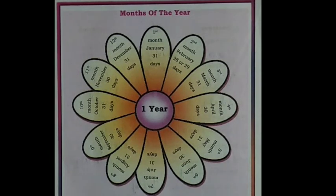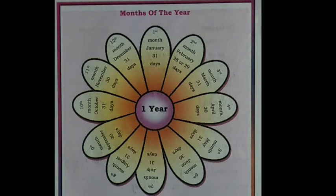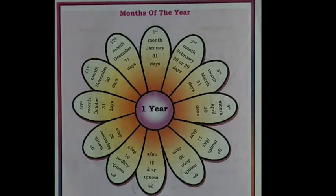Children, look at the picture and list out the Months of the Year according to the instructions given in the table. Months having 31 Days are January, March, May, July, August, October and December. Months having 30 Days are April, June, September and November. The month having the least number of days is February. It has 28 or 29 Days.